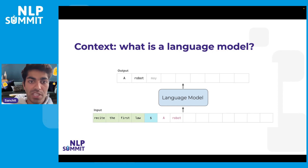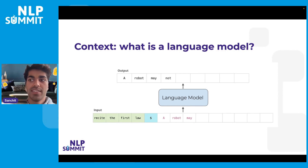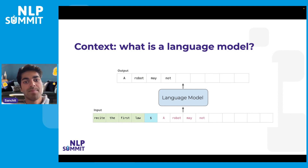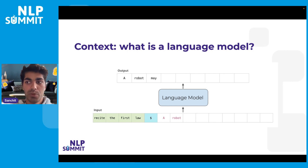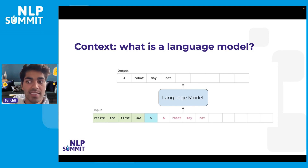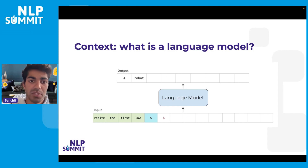Once the first model output is generated, we append it to the prompt input and rerun a forward pass. The model then generates a new token — in this case, "robot" — which we again append to the prompt input. We then rerun a forward pass, and repeating this process we can generate sentences of arbitrary length.